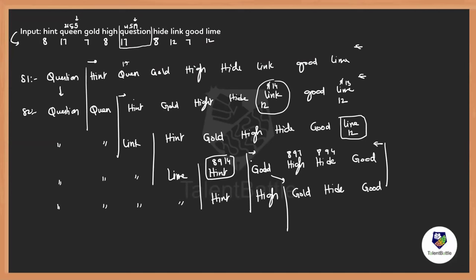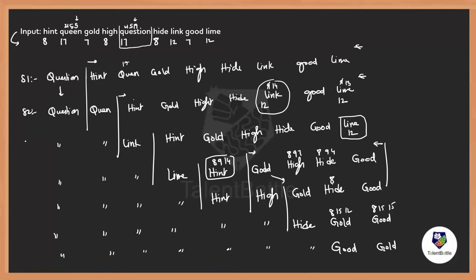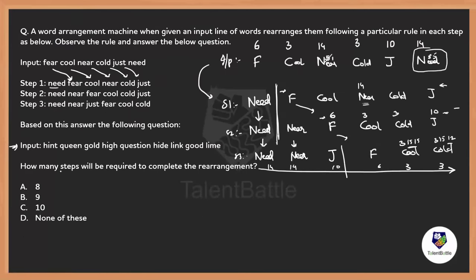Definitely you need to arrange one more. So that is question, queen, link, lime, hint, high. The next is definitely 8 — that is hide. And then gold, and then good. If you observe: 8 of 15, 12 — and 8 of 15, 15 — so definitely 15 should come here, that is good. And last is gold. Now let's check how many steps we have done: step 3, step 4, step 5, step 6, step 7 — totally 7 steps. Do we have any such answer? 8 steps? How many steps are required? 7 steps. So the first 3 options are gone — the only answer is option B.